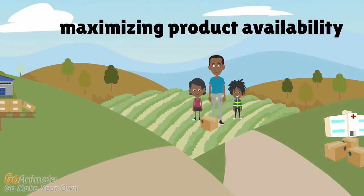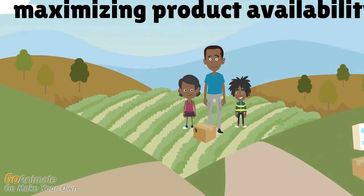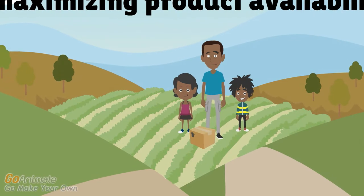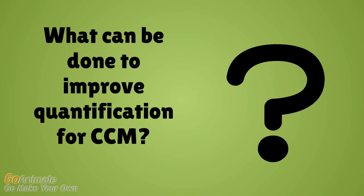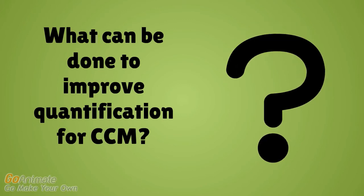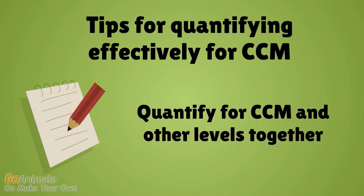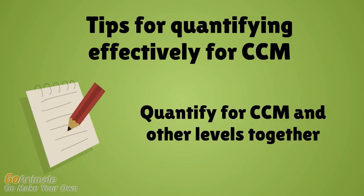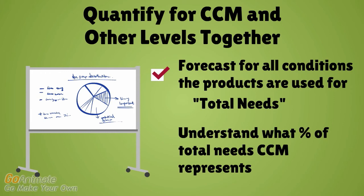If good data and processes are not available, why invest time, resources, and energy into quantifying regularly — particularly if it is so complicated? Quantification helps programs achieve health outcomes by maximizing product availability. Doing it regularly, even with imperfect information, is critical. To quantify more effectively and maximize product availability at the community level: quantify for CCM and other levels together, forecast for all conditions the products are used for, and understand what percent of total needs CCM represents.